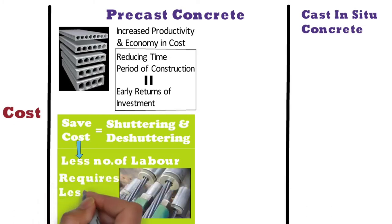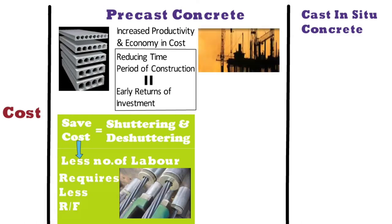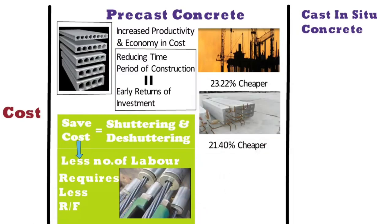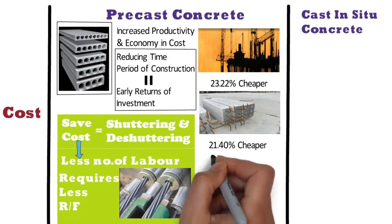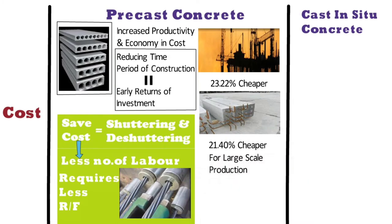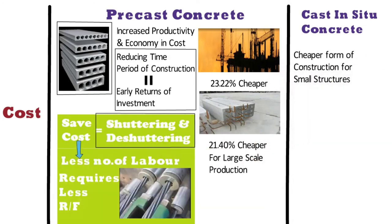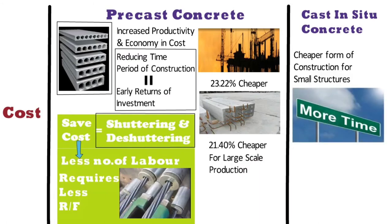hence it requires less reinforcement as compared to cast in situ concrete. As per a research article published in the Journal of Construction Engineering, on average, precast concrete slabs are 23.22% cheaper and precast columns are 21.4% cheaper than cast in place concrete construction, especially for large scale production. Whereas in situ concrete is a cheaper form of construction for small structures. The shuttering and deshuttering takes more time and space, and hence increases the cost of construction.